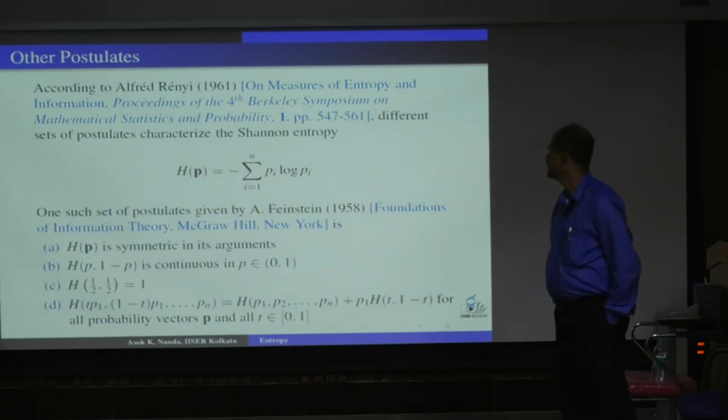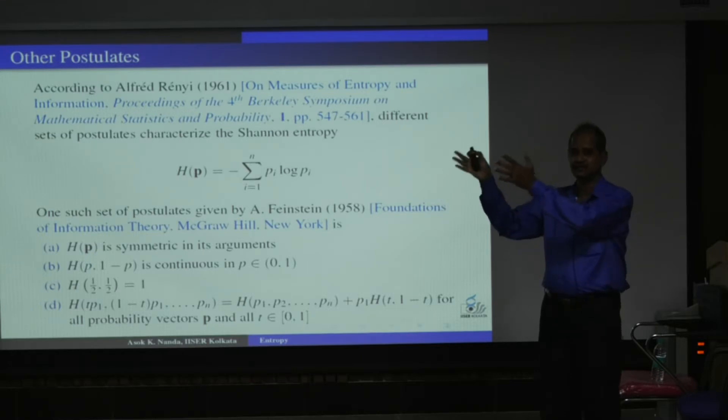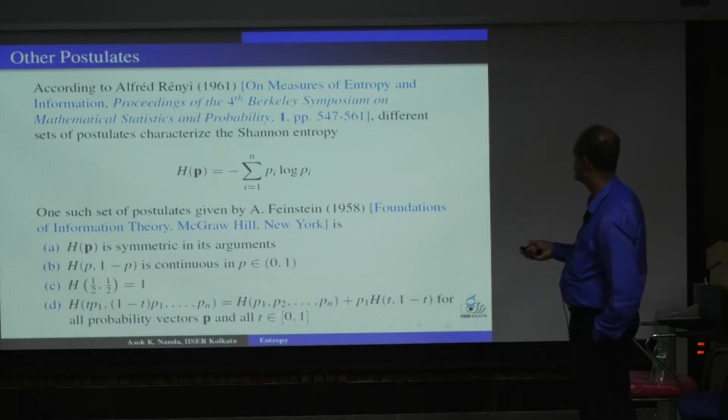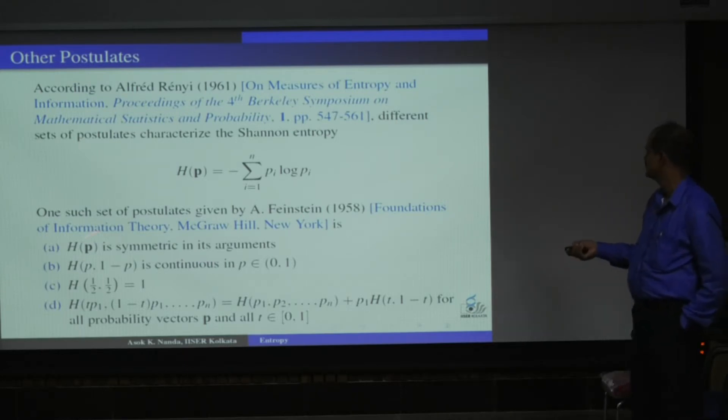Rényi. Alfred Rényi told that, even though Shannon gave one set of entropy which gave one entropy, according to Rényi, you have separate sets of postulates which will eventually converge to the same entropy. That is possible, and one such is given by Feinstein. This is another set. This is completely different from what Shannon has given, but in spite of that, this will also give the same entropy here.